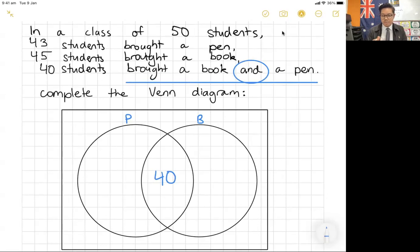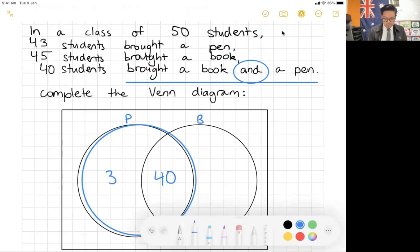Now I also have to look around here and do a little bit of math. Oh, surprise! I have to do a little bit of math here. If there's 40 people that brought a book and a pen, but there were 43 students that brought a pen, how many students actually just brought a pen? Well, it's going to be whatever my 40 is. It's going to be 43 take away 40, isn't it? If I just put the number 3 in here, if I think about it, how many people brought a pen altogether? If I look at the whole circle, I can see that there's 3 plus 40, which is 43. So there's my 43, that's where that comes from.